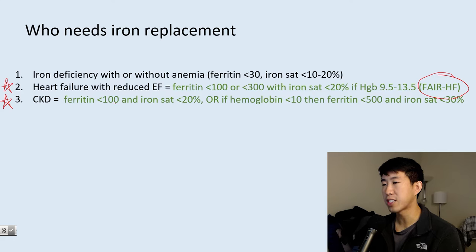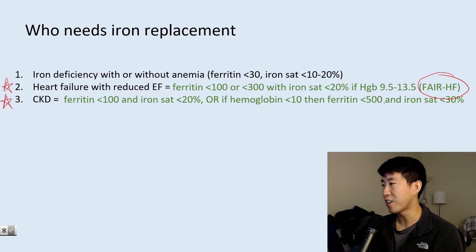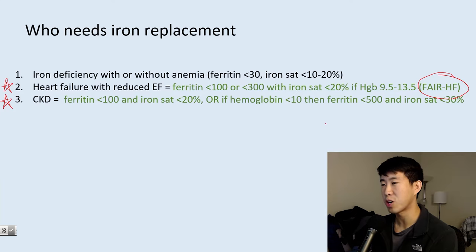In patients with CKD, we also use a more lenient ferritin threshold of less than 100 with iron saturation less than 20%. Or if hemoglobin is less than 10, we'll treat even if ferritin is less than 500 and iron saturation less than 30%. So a patient with low iron, low iron percent saturation, and a moderate-range ferritin who has heart failure or CKD is still someone we would favor treating.